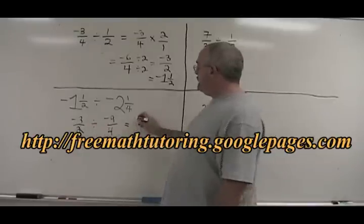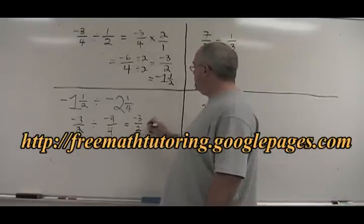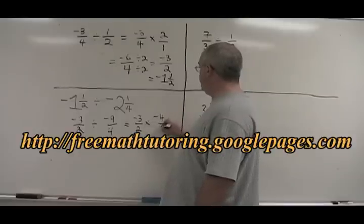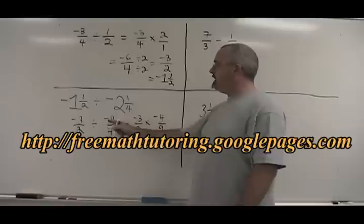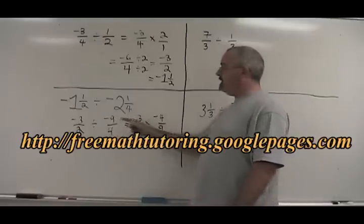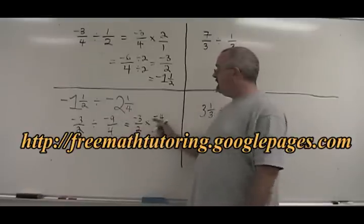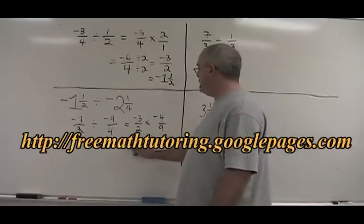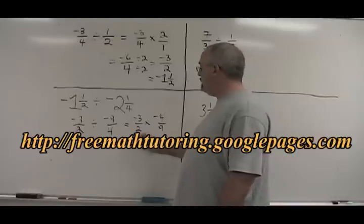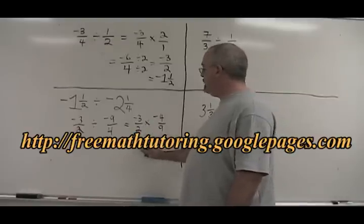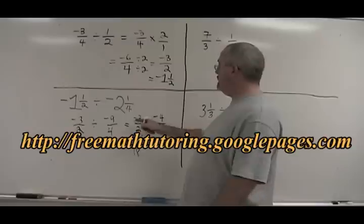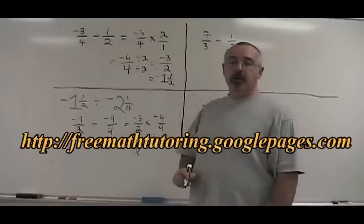We turn the second fraction upside down and we multiply instead. You don't have to make this negative sign follow the 9 around. The entire fraction is negative. This new fraction we make is negative. Negative 3 times negative 4 is positive 12. 2 times 9 is 18. We no longer have a negative. The two negative signs cancelled because we multiplied negative by negative.